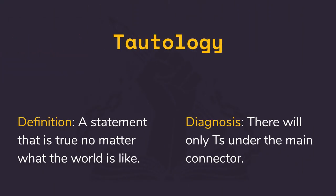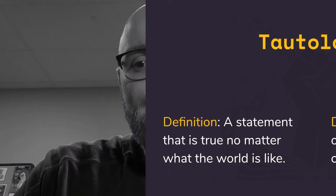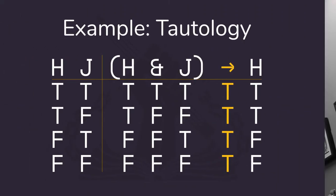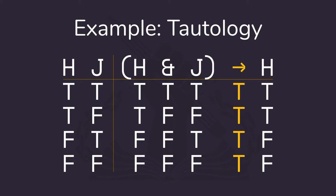In a tautology, that is a statement that is true no matter what the actual world looks like. It is just constructed such that no matter what, it's true. What you're looking for to identify a tautology is only true values underneath the main connector.